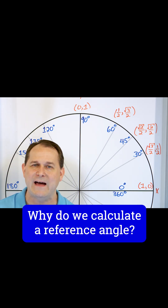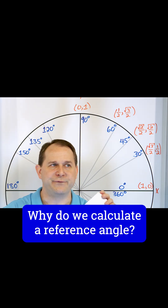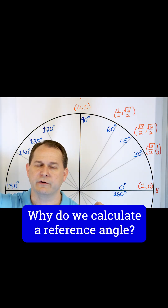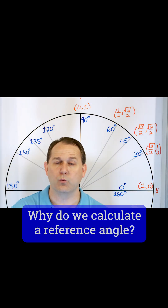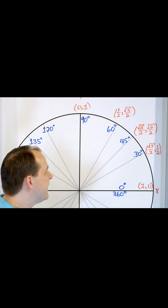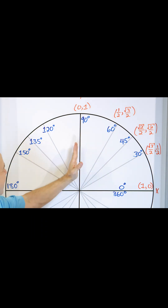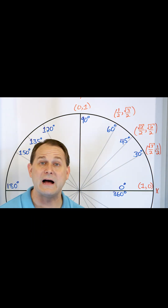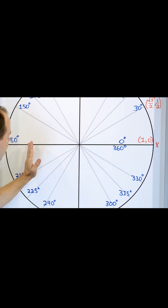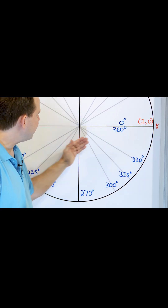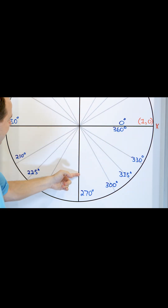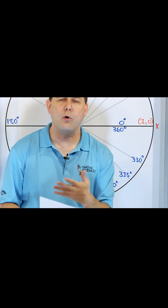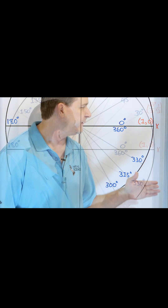To figure out what the sine of a value is, you figure out where it is in the unit circle and you project it and see where it lands on the y-axis. If the projection is anywhere up here, the sine is a positive number. If you are down here and you do a projection on the y-axis, then the y-axis is negative, and you'll always get negative sines.